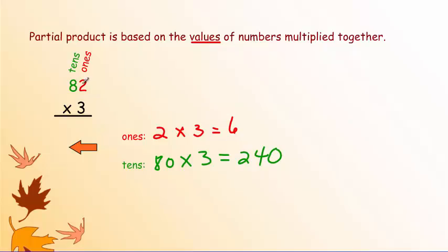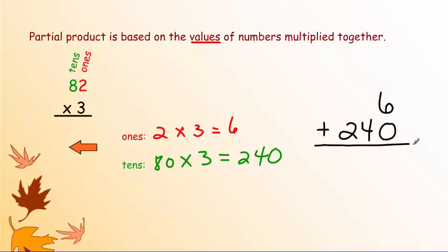Now that you have the values of each place written out — 6 in the ones, and 240 for the tens place — rewrite those numbers over to the right, carefully lining them up. The 6 is in the ones place. When you write 240, the zero goes in the ones place, the 4 is in the tens, and the 2 is in the hundreds. Now add them together: 6 plus 0 is 6, 4 plus nothing is 4, and 2 plus nothing is 2. So 82 times 3 is equal to 246.